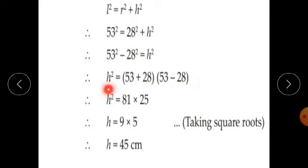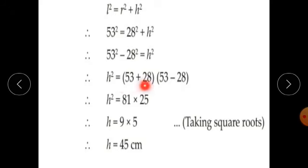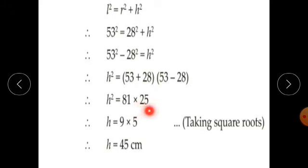Using the identity A squared minus B squared equals (A plus B)(A minus B): H squared equals (53 plus 28) into (53 minus 28), which equals 81 into 25. Now taking the square root.